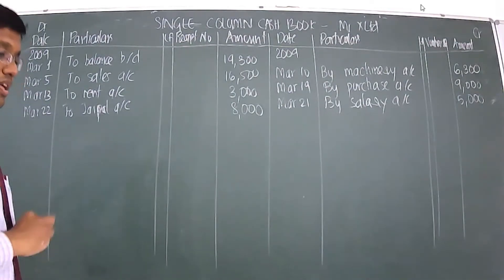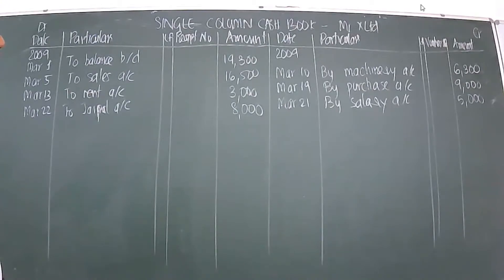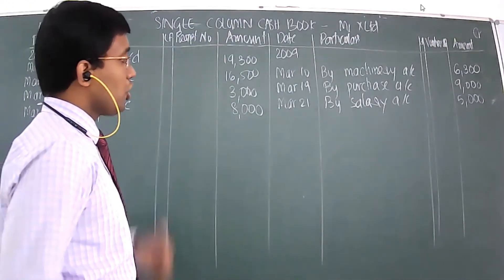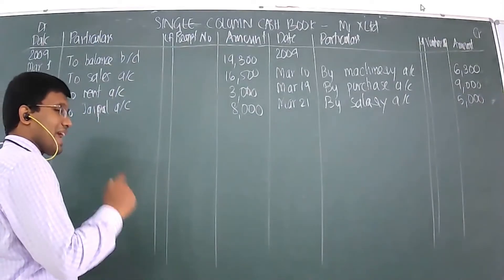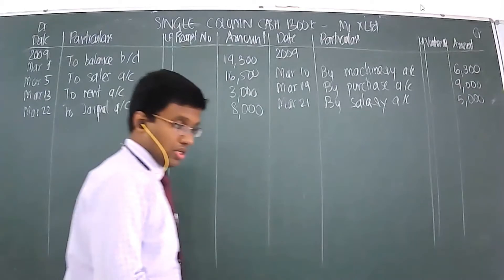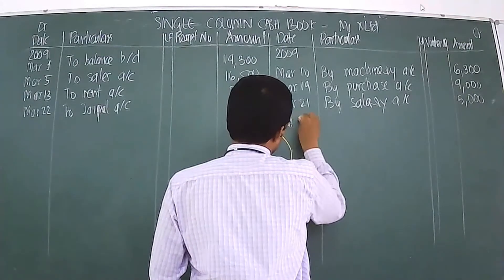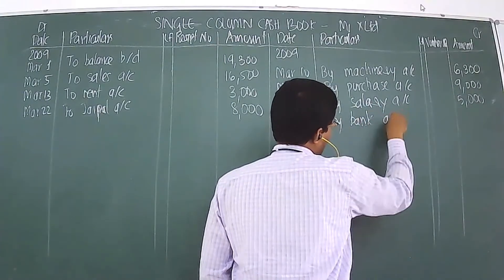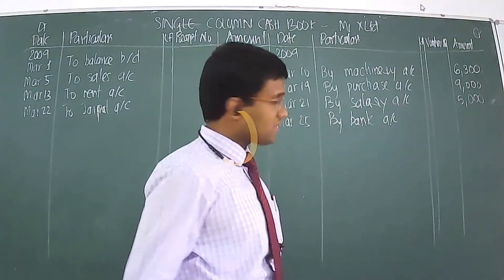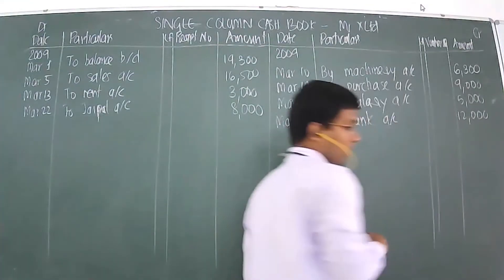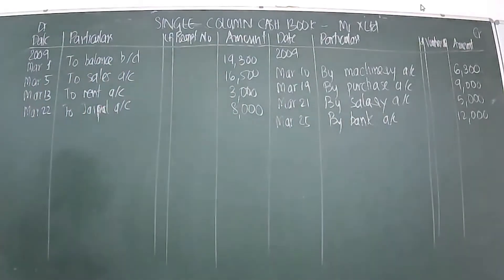March 25th: deposited into bank. What is happening here? You're taking money from your business, going to the bank, and depositing it. Cash is going out from your business into your bank account. So it features on the credit side: By Bank Account, and the amount is 12,000.